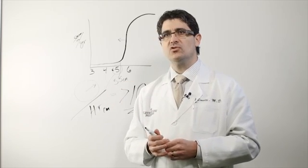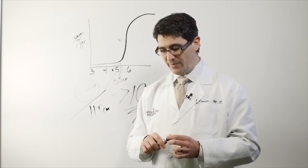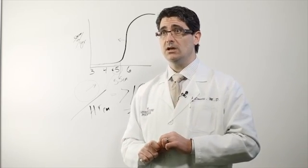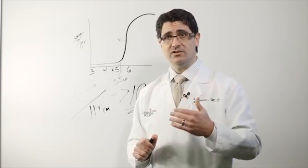One special category of patients are those with Loeys-Dietz syndrome where the recommendation is to operate on the ascending aorta when it's 4.2 centimeters, especially if they've had a family history of dissection or rupture.